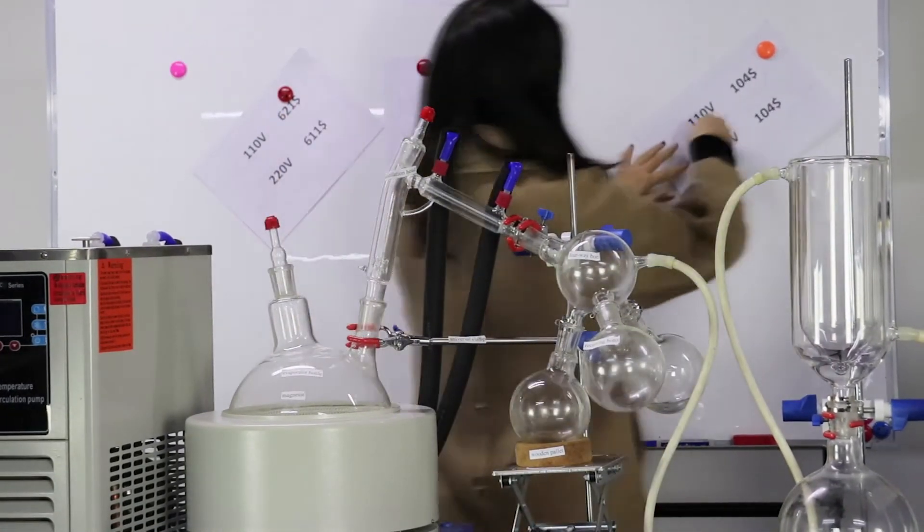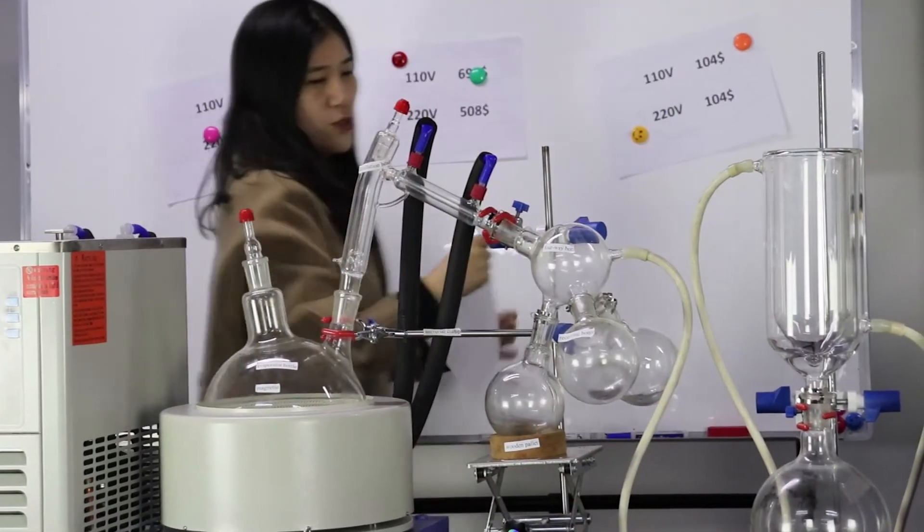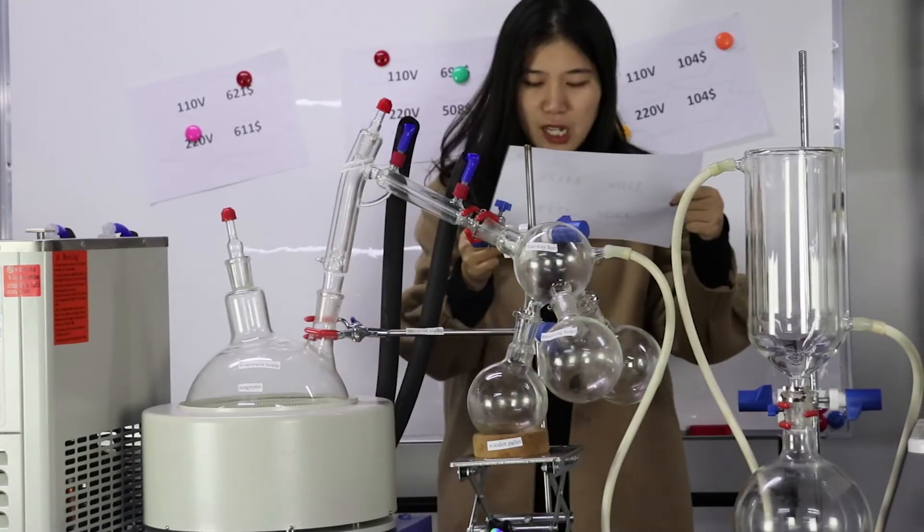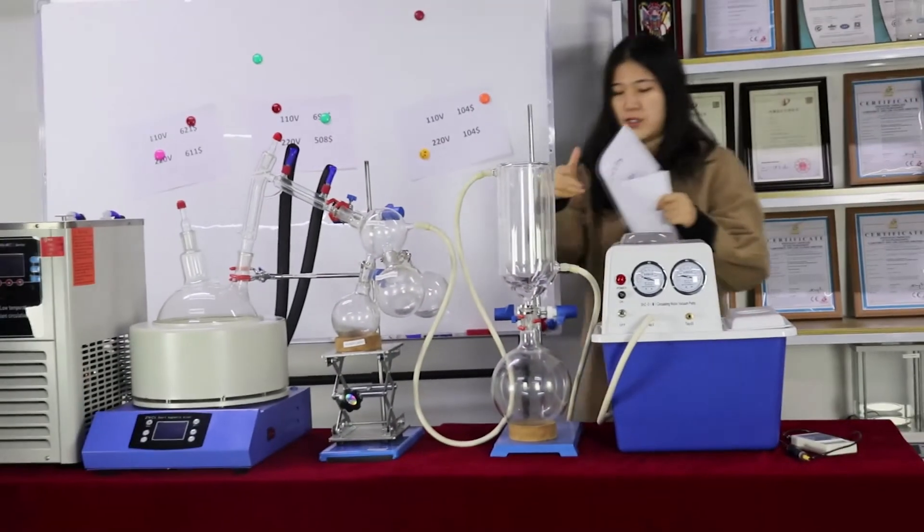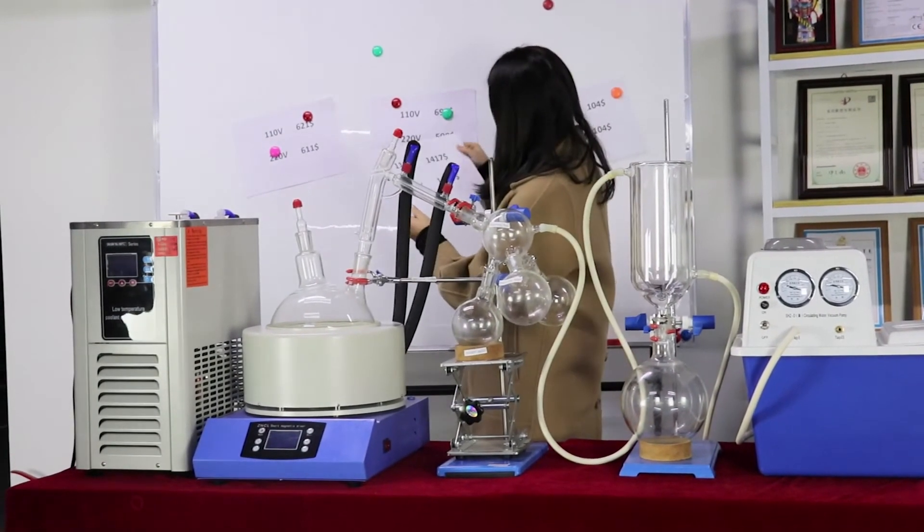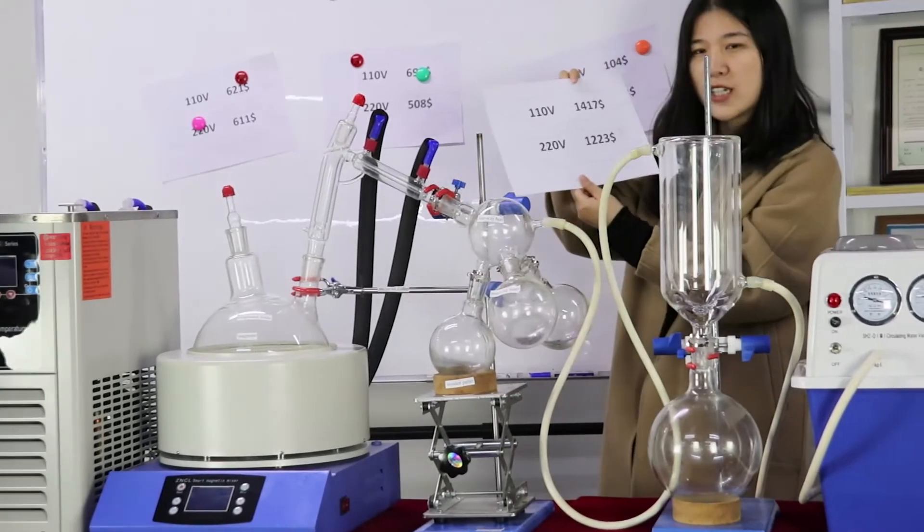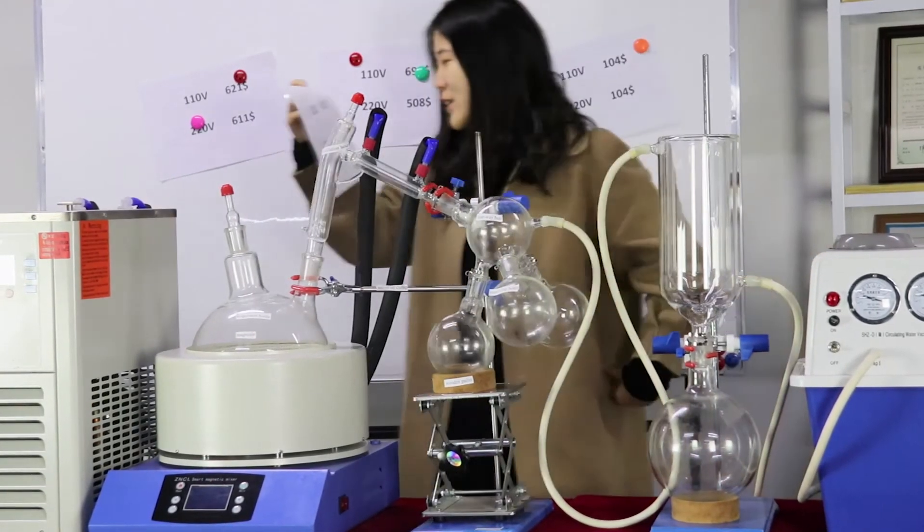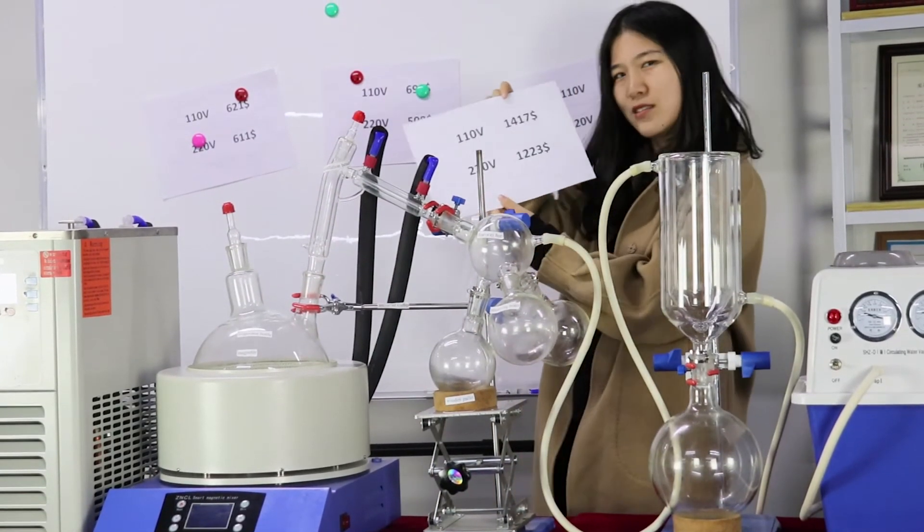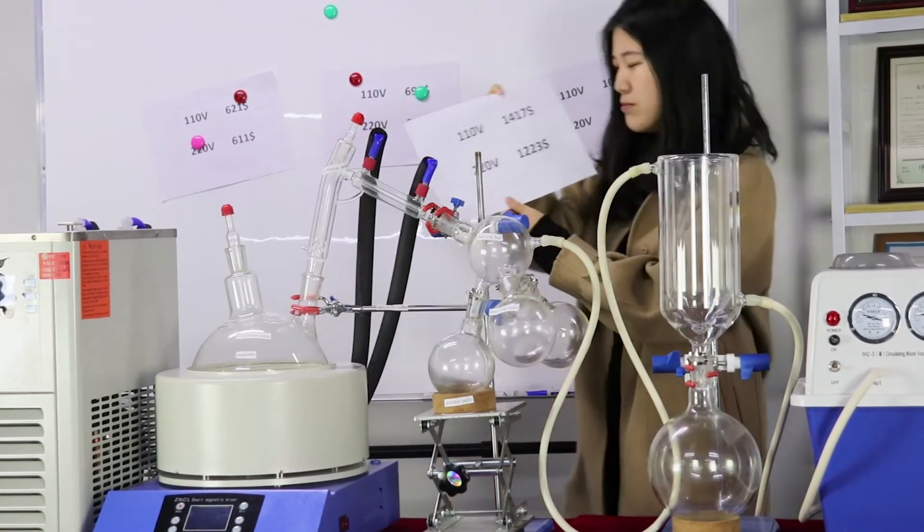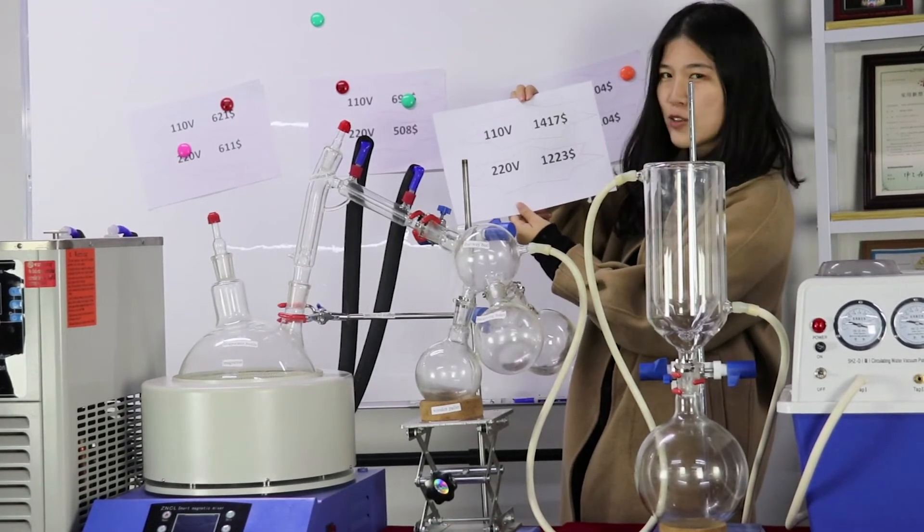How about the whole set? How about the whole set price? Very excited too. The whole set: chiller and the distillation system and the vacuum pump, you just need to pay $1,223. Do you get it? The whole set just needs $1,223.